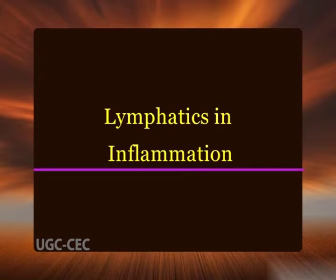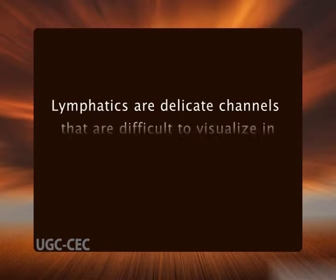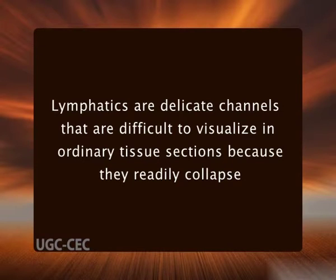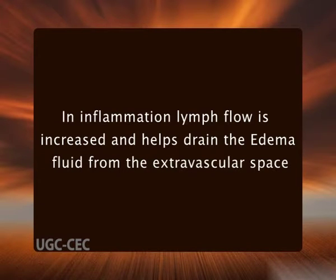The system of lymphatics and lymph nodes filters the extravascular fluids. Together with the mononuclear phagocyte system, it represents a secondary line of defense whenever a local inflammatory reaction fails to contain and neutralize an external agent such as a microbe. Lymphatics are delicate channels lined by continuous thin endothelium with loose overlapping cell junctions and no muscular support except in the large ducts. In inflammation, lymph flow is increased and helps drain edema fluid from the extravascular space; not only fluid but also leukocytes and cell debris may find their way into lymph.